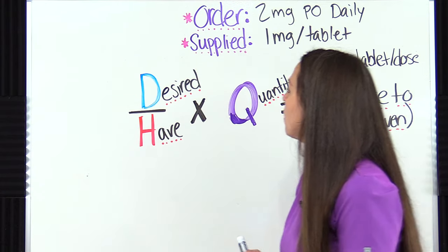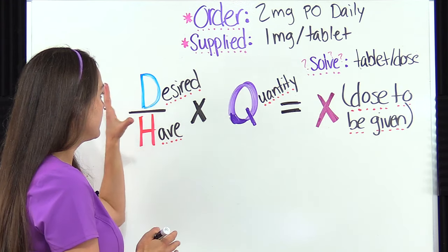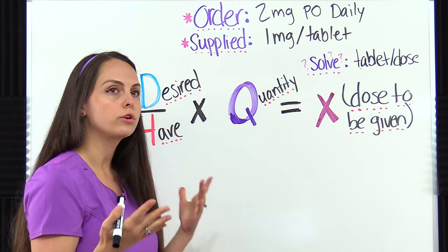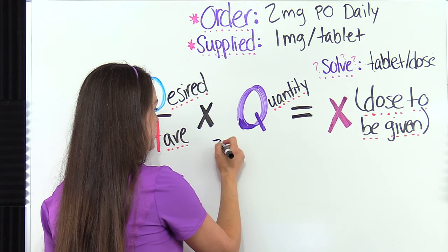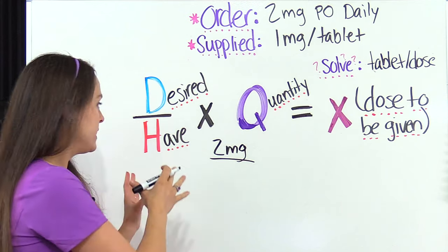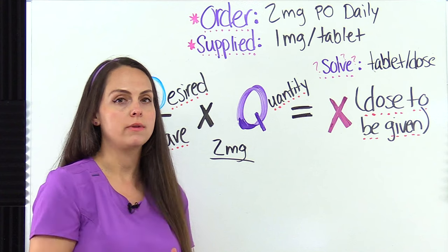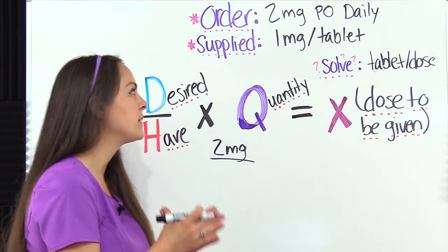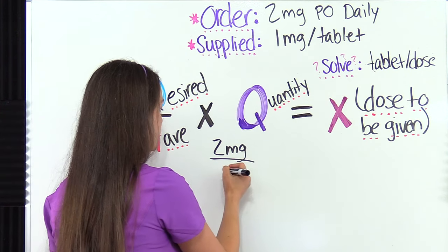So let's plug in what we have. We're going to start with the desired part — this is what is desired for the patient to have, the ordered dose. So we're ordered to give the patient two milligrams. The H is the have part — this is what you have on hand, what you've been dispensed from pharmacy. You're looking at that medication label and the strength tells us it's one milligram.